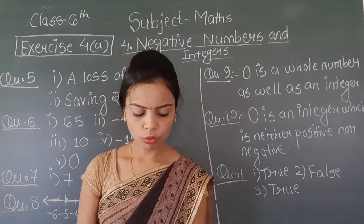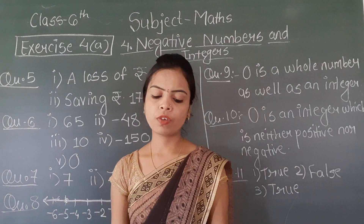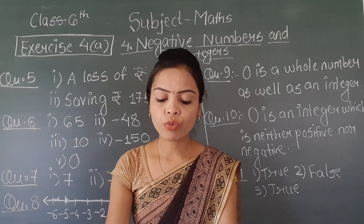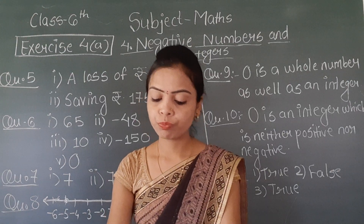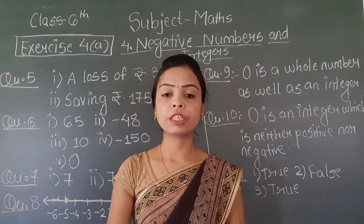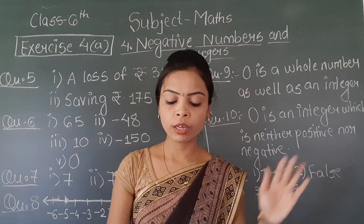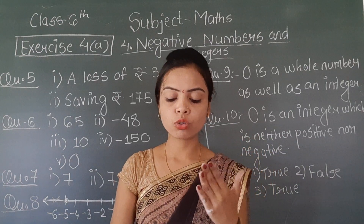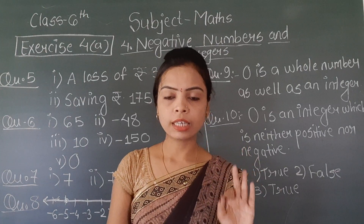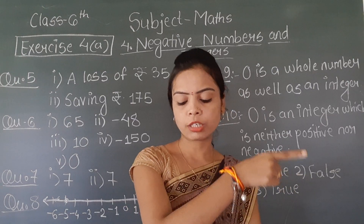Question number 12: fill in the missing numbers on these number lines. For the first number line, on the right side of 0 the numbers written are 1, 2, 3. On the left side we write: minus 1, minus 2, minus 3, minus 4, minus 5, minus 6, minus 7.